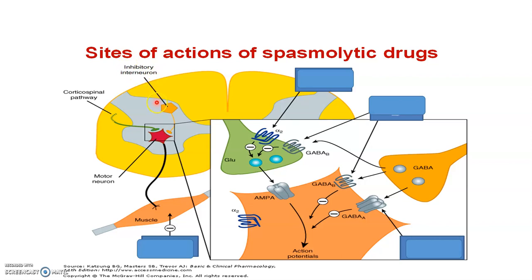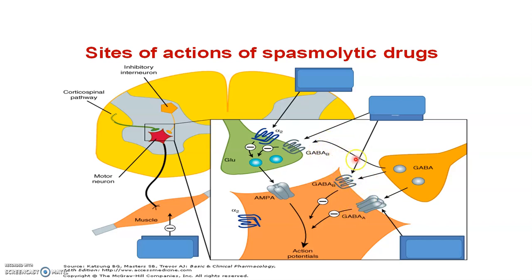This diagram is from Katzung's Basic and Clinical Pharmacology, which you are highly recommended to read. The diagram shows the inhibitory interneuron, corticospinal pathway, and motor neuron. Try to identify which drug acts at which receptor — for example, which drug acts at the alpha-2 receptor or at the GABA-B receptor.